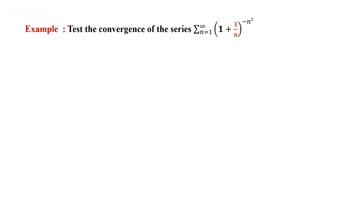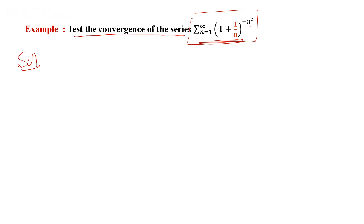Example: Test the convergence of the series whose general term involves (1 + 1/n)^(-n²). When we observe a series with powers like -n² in the exponent, we mostly use the root test. The nth term is u_n = (1 + 1/n)^(-n²).